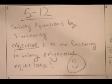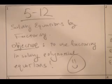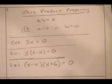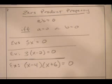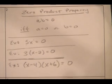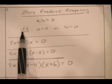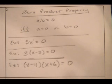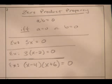Let's talk about the zero product property. The zero product property says a times b equals zero if, and only if, a equals zero or b equals zero — or both equal zero.